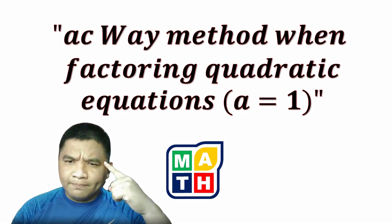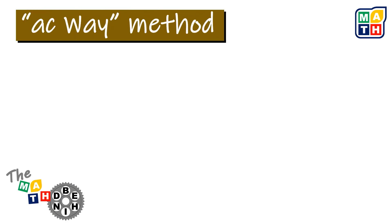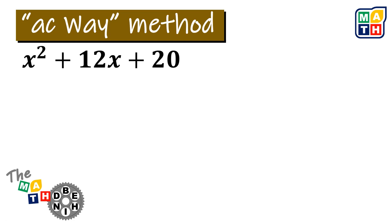Let's take a closer look at the AC-Way method when factoring quadratic equations where A equals 1. The AC-Way method is a shortcut in finding factors of a quadratic expression — say this quadratic expression here: x squared plus 12x plus 20. We can find the factors of this using the AC-Way method in three different steps.